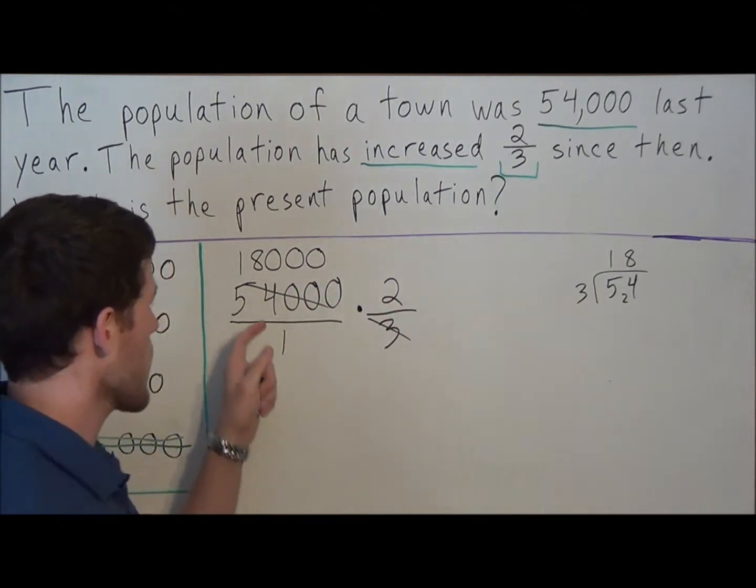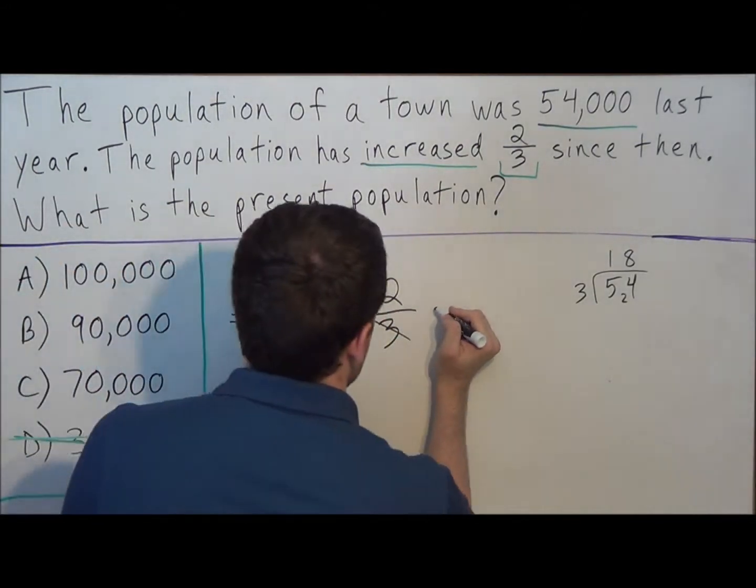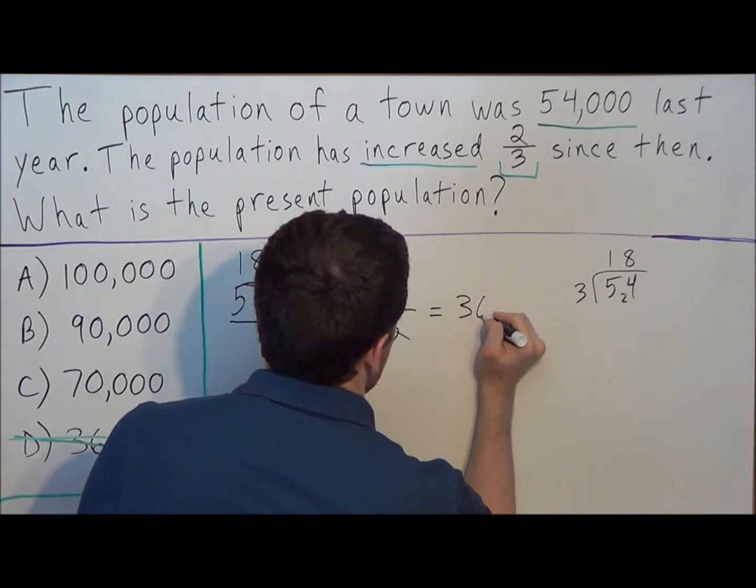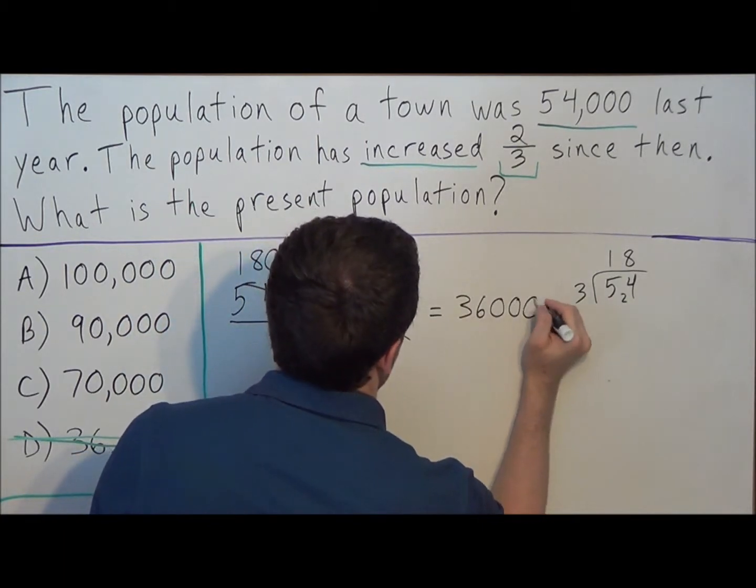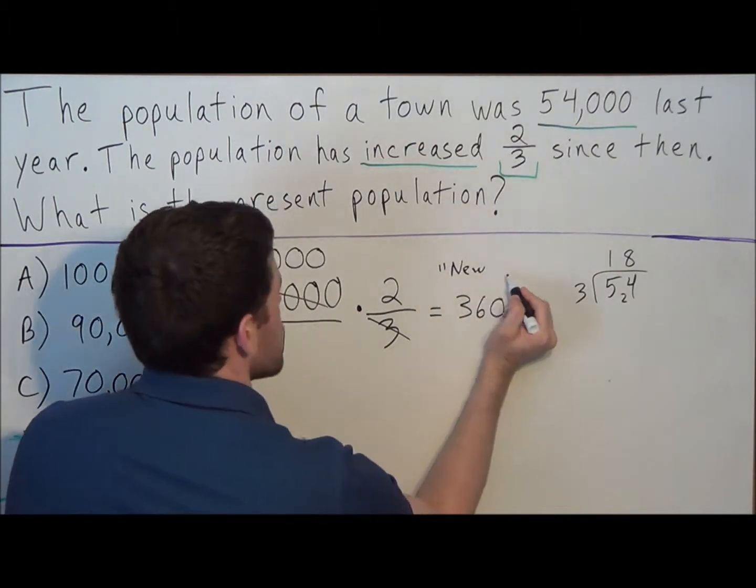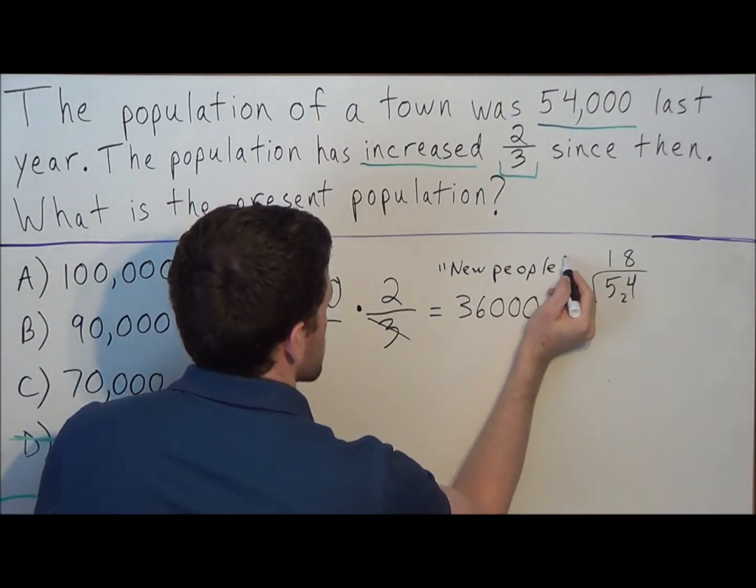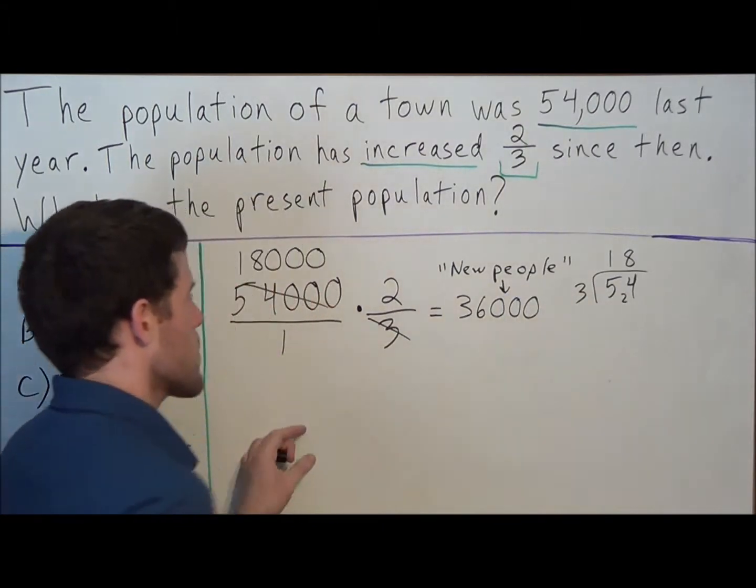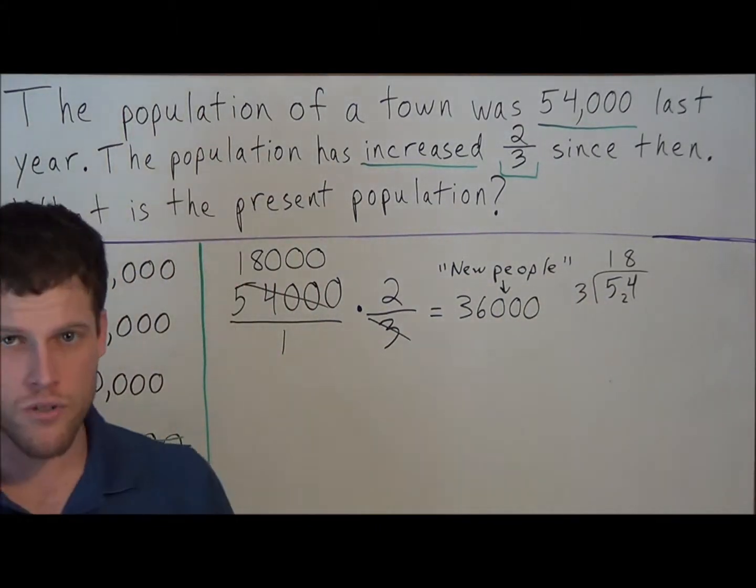Now from this step, all we have to do is do 18,000 times 2, which is going to equal 36,000. So this number here represents the new people, the people who were added to the town since last year. But then think about it. That's why 36,000 was here. It was a trap.